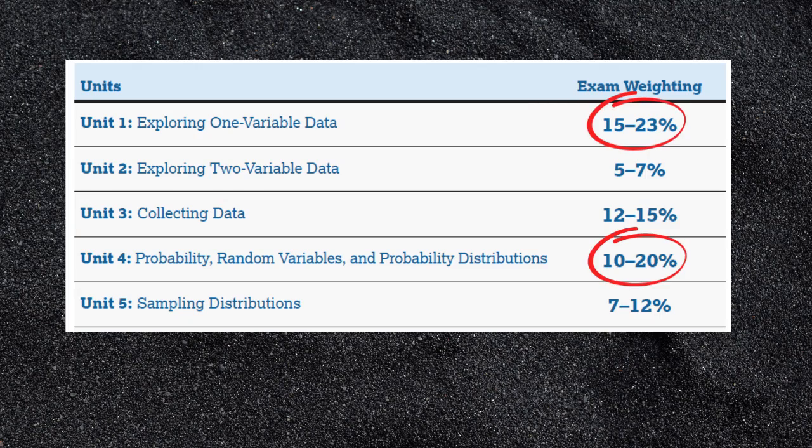Units eight and nine are what most kids learn at the very end, and oftentimes even teachers rush through them. But the good news is that a big chunk of the multiple choice questions are not from units eight and nine — we're talking maybe one or two questions max from each of those. The majority of questions come, if you look at the data, from unit one and unit four. That's where you're gonna see the big chunk of questions. Make sure you've spent a lot of time practicing those. But there are also a ton of good inference questions from units six and seven.